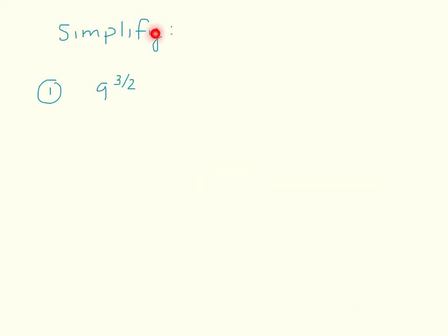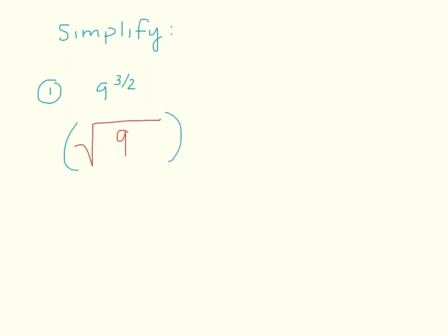Let's simplify 9 to the 3 halves power. I'm going to convert it to radical form: since the denominator is 2, this becomes a square root; 9 is my radicand; and since 3 is in the numerator, that becomes my exponent. Since I know the square root of 9 will be an integer, I'll take that whole quantity to the third power to work with smaller numbers. The square root of 9 is 3, and 3 cubed is 27. You could also cube 9 first and then take the square root — either way gives 27.